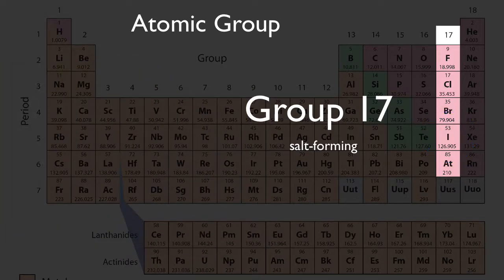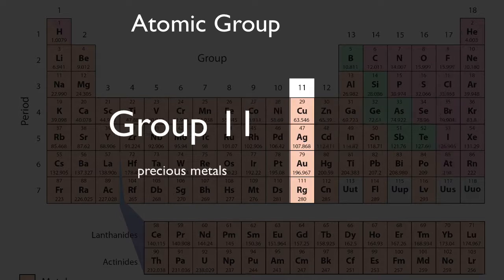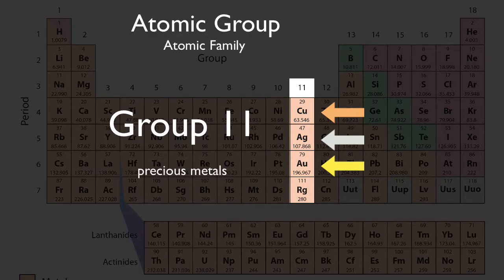So elements above and below one another, they share similar properties. Take note of group 11. This is where you'll find the precious metals gold, silver, and copper. So it's no coincidence that they appear directly above and below each other in the periodic table. We say they're in the same atomic group, or family.